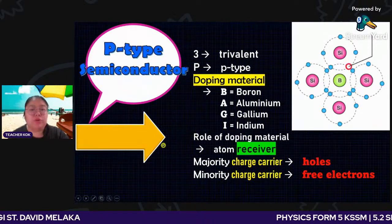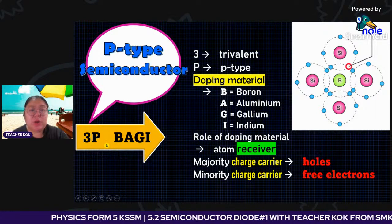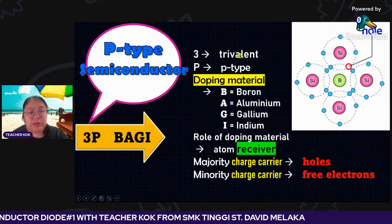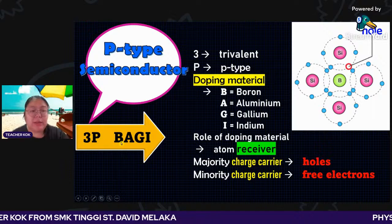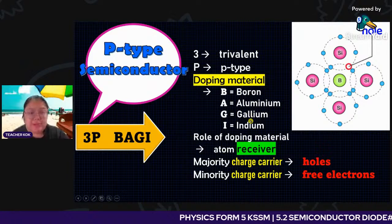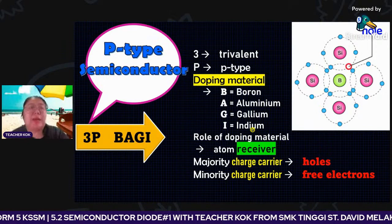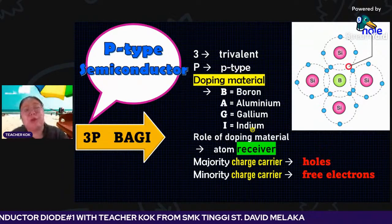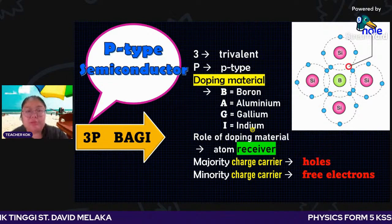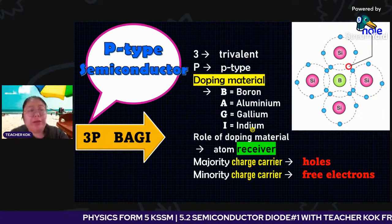For P-type semiconductor, the majority is hole and the minority is electron. After P-type, I need to explain N-type — how to create it. Let's explain P-type first. You can see this video clip: silicon, with aluminium added as impurity. Aluminium only has three electrons, creating one empty hole. The electron keeps moving to fill the hole, meaning the situation is conducting electricity.